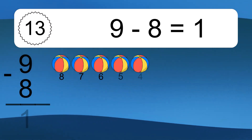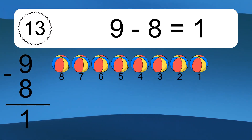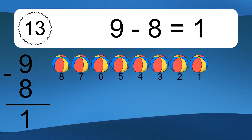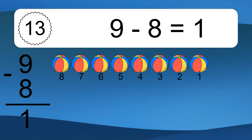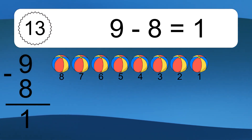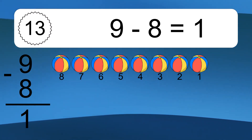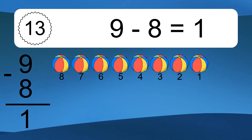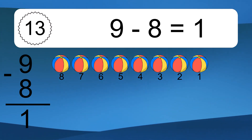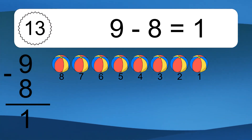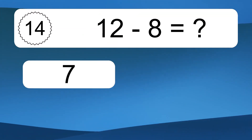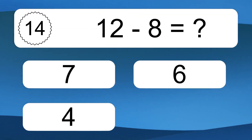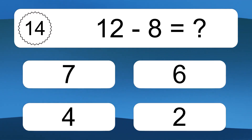9 minus 8 equals what? 9 minus 8 equals 1. Let's count it. 8, 7, 6, 5, 4, 3, 2, 1.